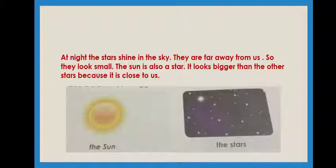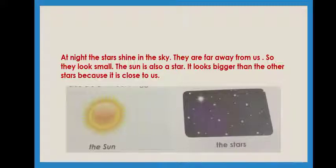Children, when sunset happens, what will we see? We will see the moon and stars, isn't it? Stars are far away from us, that's why they look small. Do you know one interesting thing? The sun is also a star, but the sun is nearer to us. That's why we see a bigger sun, not small like other stars. Sun is nearer to earth, that's why it looks very big.